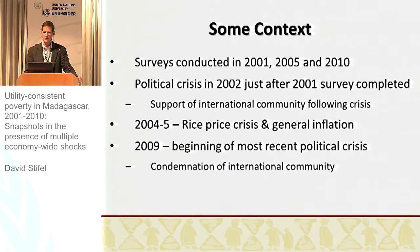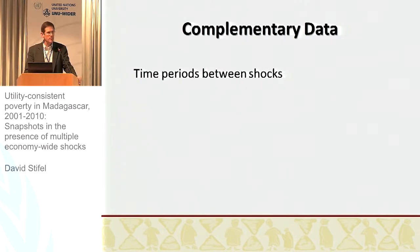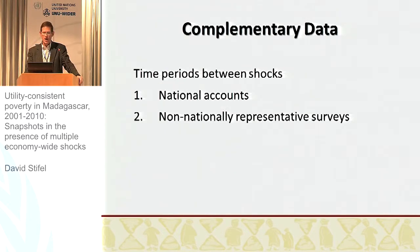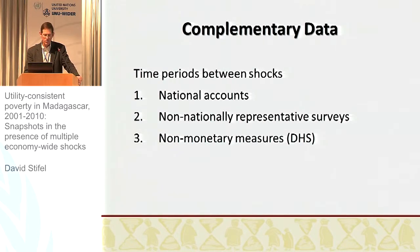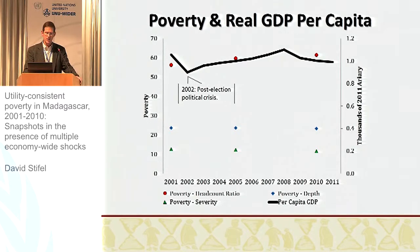There is hope that elections next month will take place. To better understand what is going on, we use complementary data including national accounts data, non-nationally representative data, an urban labor force survey, some rural panel data, and non-monetary measures. This graph gives a great sense of what was going on between the surveys — the red dots are the headcount ratios from the respective surveys. Shortly after the first survey, the political crisis occurred and there was a sharp drop in GDP per capita, followed by a rise.